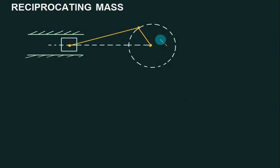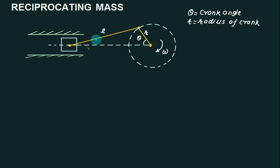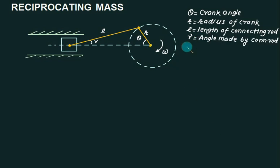Let's assume that a crank is rotating in this direction at a speed equal to omega. Let theta be the angle made by the crank, R be the radius of the crank, and L be the length of connecting rod. Let's define one term called N, which is the ratio of L divided by R — length of connecting rod divided by crank radius. Naturally, N is always greater than unity and is a very large value as compared to one.